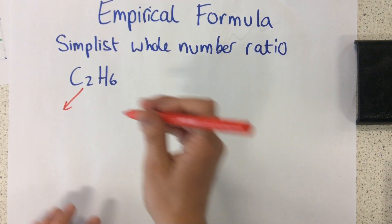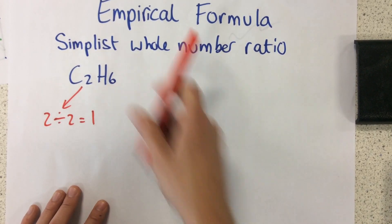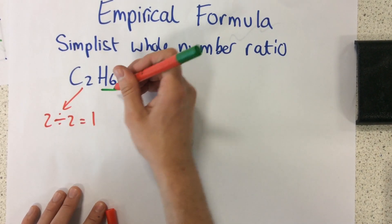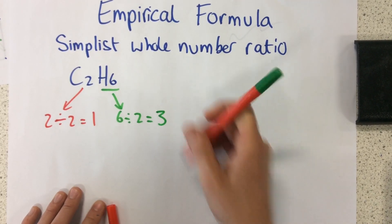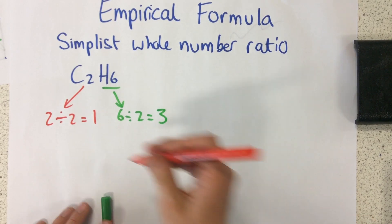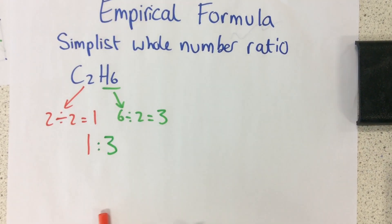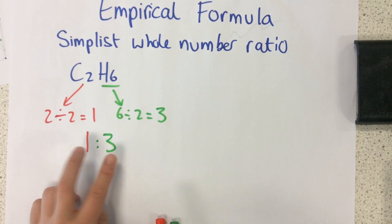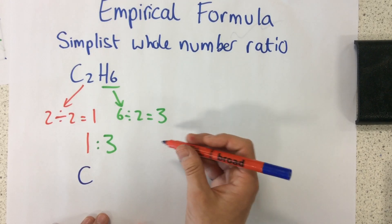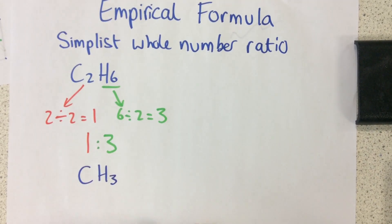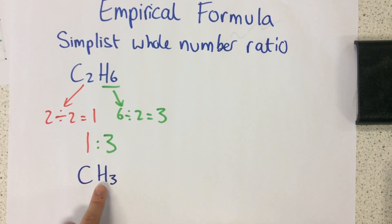So for this one here, I'm going to do two divided by two, which equals one. For my hydrogen here, I'm going to do six divided by two, which equals three. So then I just need to write this as a ratio. My ratio is one carbon atom to three hydrogen atoms. So how to write this out now is I've got one carbon and three hydrogens. So that there is my empirical formula, the simplest ratio of carbon to hydrogen.